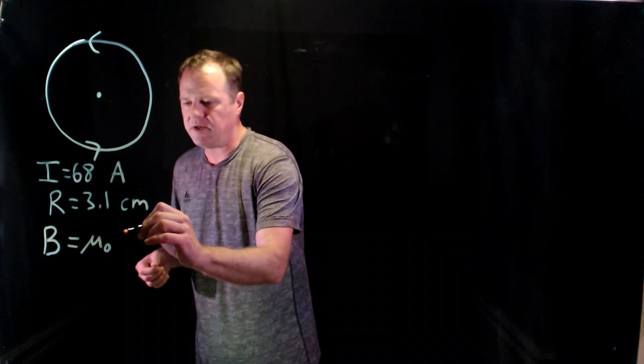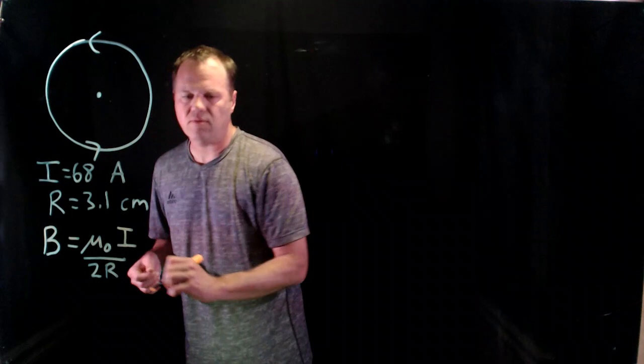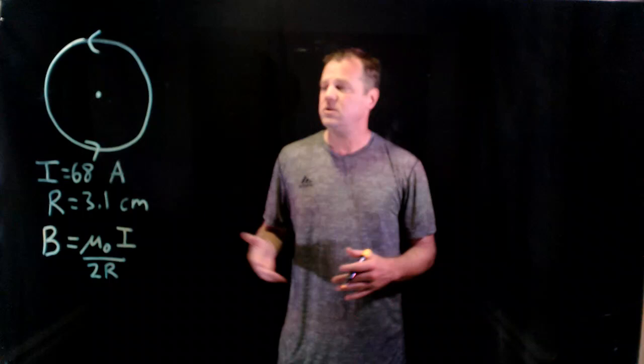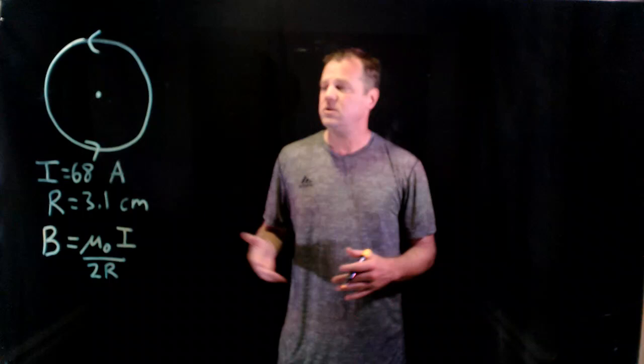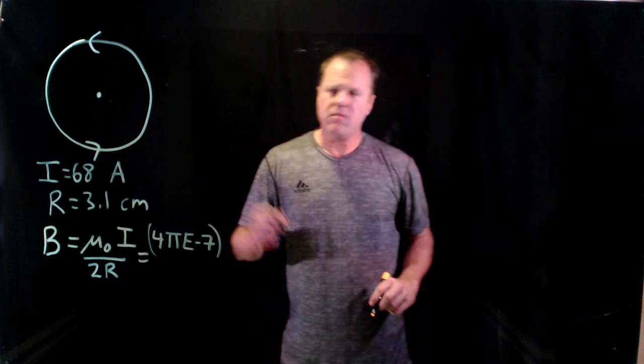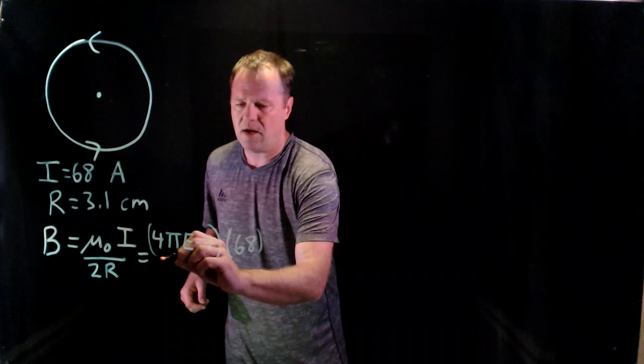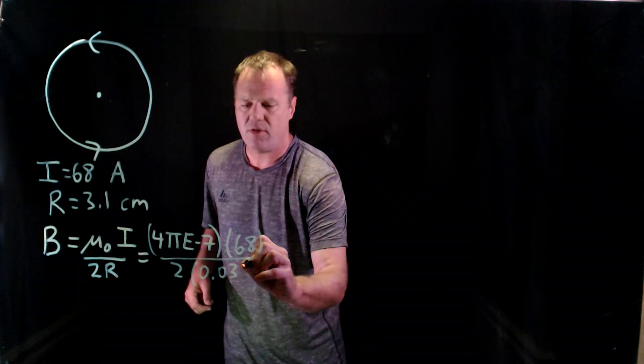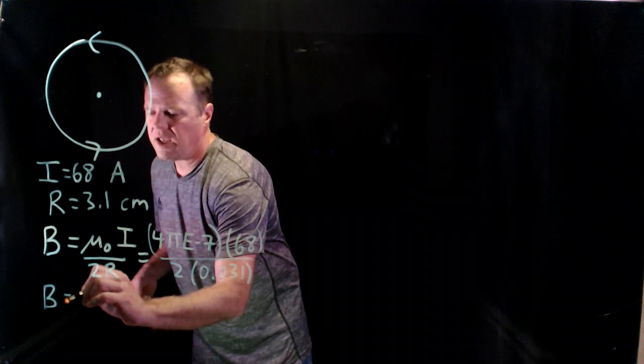It's the current divided by twice the radius. We know the current, the radius, and the fundamental constant. So we can just chuck those numbers into that formula. Pretty straightforward. No algebra needed. We'll have to do one unit conversion since we have non-SI units for R. 4 pi times 10 to the minus 7 is mu naught. The current is 68 amps. The radius, when we convert, would be 0.031 meters. We'll throw those into the calculator. And we get 1.38 times 10 to the minus 3.